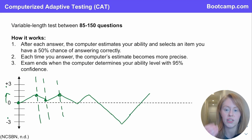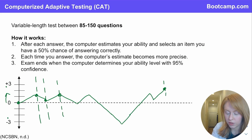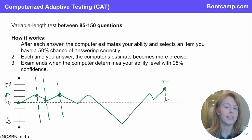So you continue answering questions until you've answered at least 85 questions and the computer's estimate becomes precise enough that they can say with a 95% certainty that you are either above or below this passing standard, and then the exam ends. That can occur in 85 questions; it can occur in up to 150 questions. But that is the basics of how computerized adaptive testing works to structure your exam.